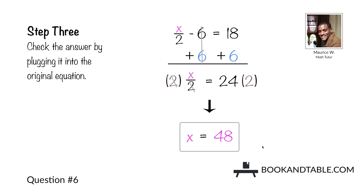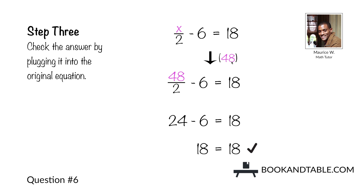Step three: check this by plugging it into the original equation, x divided by 2 minus 6 is equal to 18. When we plug 48 in for x, 48 divided by 2 equals 24, and 24 minus 6 gives us 18. We see that 18 equals 18, which means this is the correct value for x. The answer to question number six is x is equal to 48.